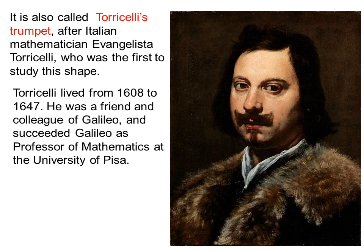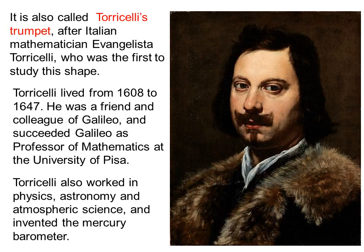Torricelli lived from 1608 to 1647. He was a friend and colleague of Galileo and succeeded Galileo as professor of mathematics at the University of Pisa. Torricelli also worked in physics, astronomy, and atmospheric science and invented the mercury barometer.